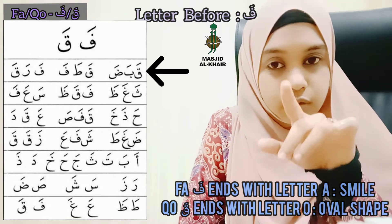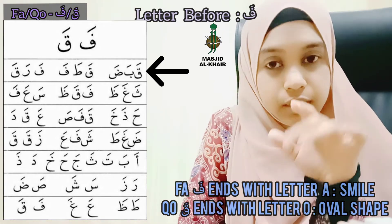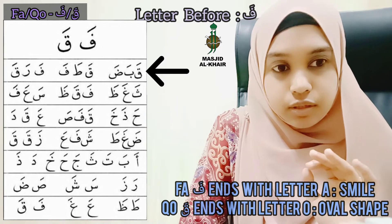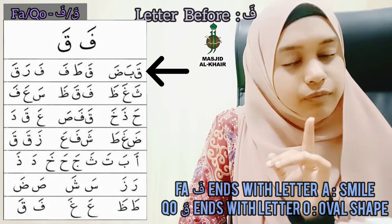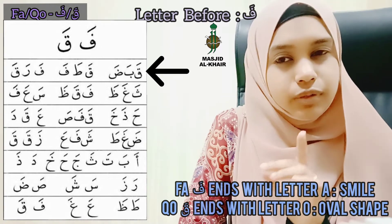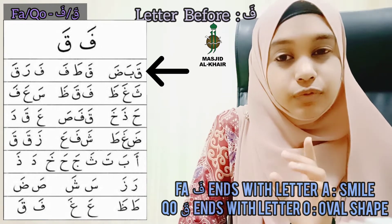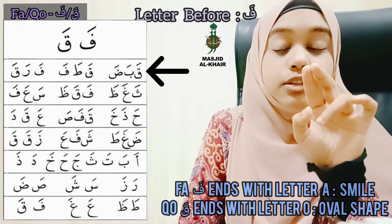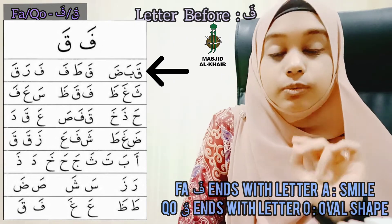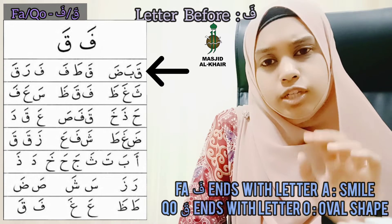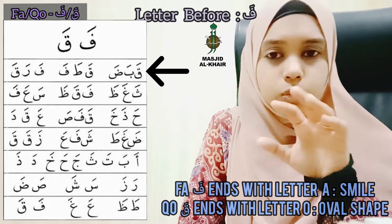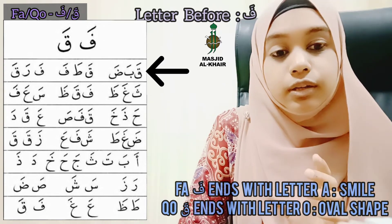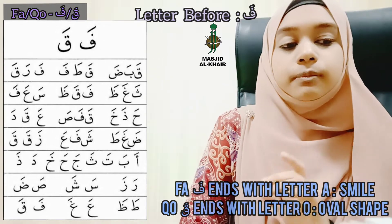Don't be confused with the pattern — look at the pattern and look at the number of dots. With QO, be very careful; don't get confused with TA. Remember TA — there are two dots on top also. So don't just look at two dots and think it's QO. Look at the pattern as well.